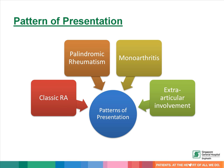Other than the classical presentation, rheumatoid arthritis can present initially as palindromic rheumatism, monoarthritis, or extra-articular involvement.